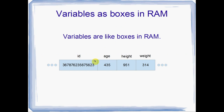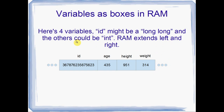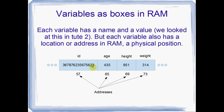So variables are boxes in RAM — we went through this before. Maybe we've got four variables: id, age, height and weight, and they've got a bunch of numbers in them. RAM goes on forever, that's what these dot dot dots represent. Maybe my id is a long long, an 8-byte integer variable. Maybe these others are integers.